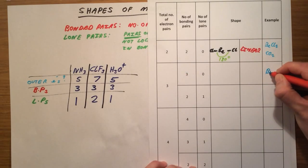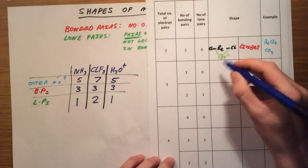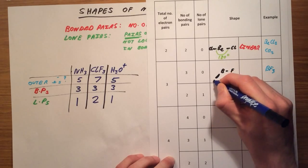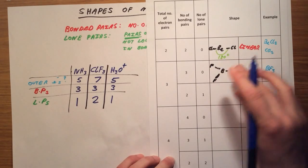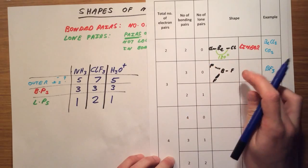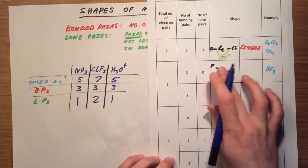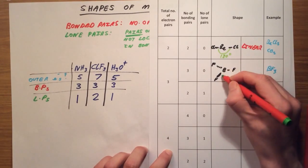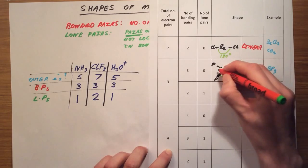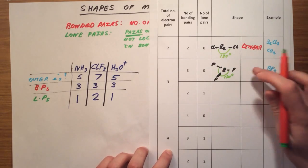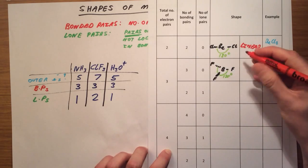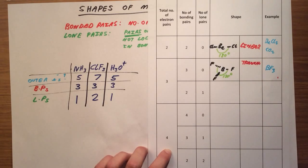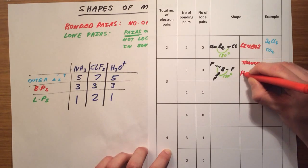The next shape has 3 bonded pairs and 0 lone pairs. A common example is BF3. Here we have a central boron atom with fluorines arranged around it. Importantly, this is a flat molecule — in the plane of the paper. The bond angle between all the fluorine atoms is 120 degrees. Because there are three bonded pairs, the name of the shape is trigonal, and because it is flat, it is trigonal planar.